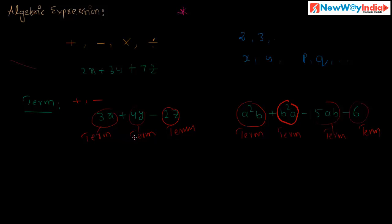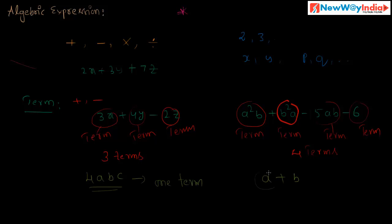The several parts of an algebraic expression separated by a sign plus or minus are called the terms of the expression. For example, 3x plus 4y minus 2z has 3 terms. The expression a-squared-b plus b-squared-a minus 5ab minus 6 has 4 terms. 4abc is only one term. a plus b has 2 terms. So 3x is 1 term, 4y is another term, and 2z is another term.